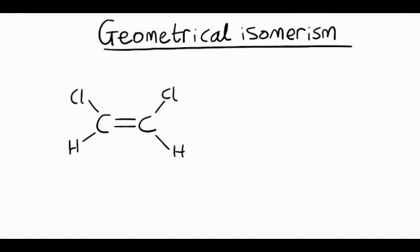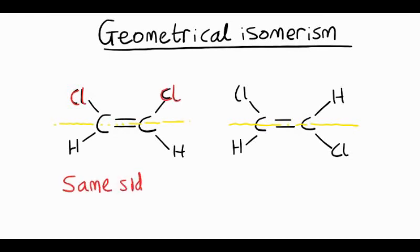Take, for example, 1,2-dichloroethene. We can draw the molecule like this or like this, and because the carbon-carbon double bond can't rotate, these are two separate molecules. We can't go from one to the other without breaking bonds. On the left-hand molecule, the chlorines are on the same side of the double bond, so we call this a cis isomer.